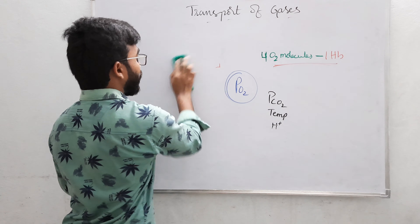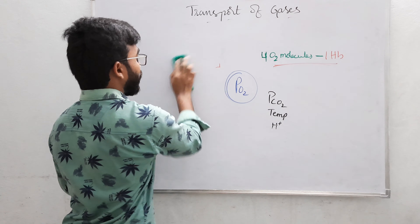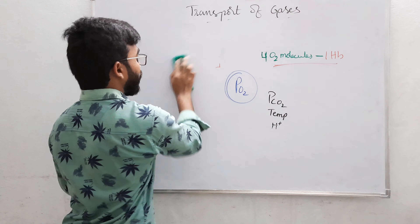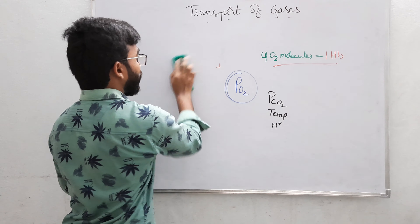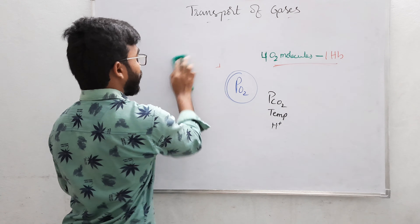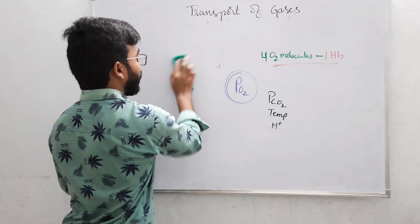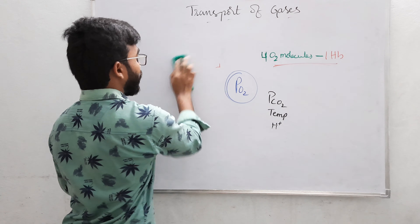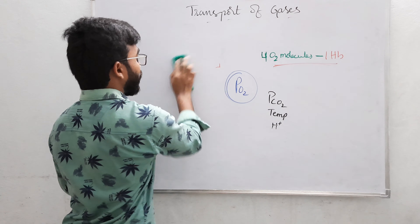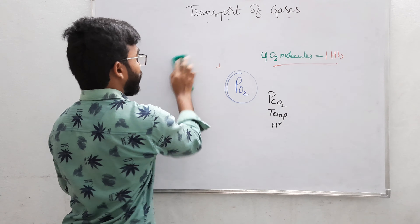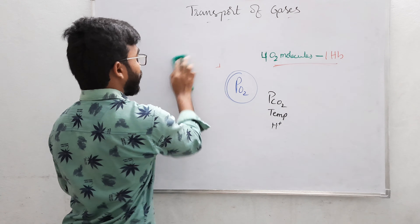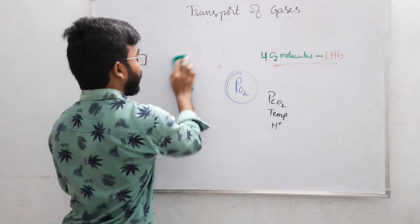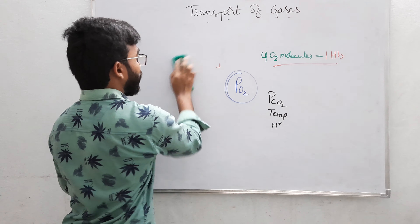The binding of oxygen with the hemoglobin is mainly dependent on the partial pressure of oxygen. This is also affected by the partial pressure of carbon dioxide, temperature, and H plus ions. The partial pressure of carbon dioxide, temperature, and concentration of H plus ions can also alter the binding of oxygen with hemoglobin, but to a little extent. Now let us see the dissociation curve of oxygen.